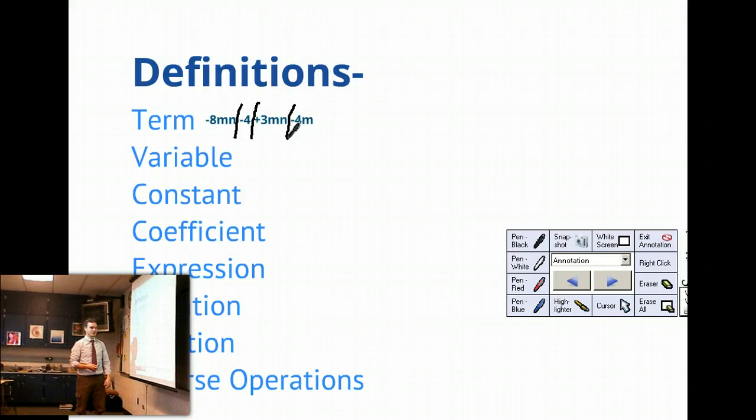The next thing is a variable. Variables like m or n were used up there. One thing I want to point out is that these mn terms would be like terms. The minus 4m would be not like. I would not be able to combine that with the negative 8mn and the positive 3mn. That would be a whole separate category of like terms, which we'll talk about like terms as we're simplifying.